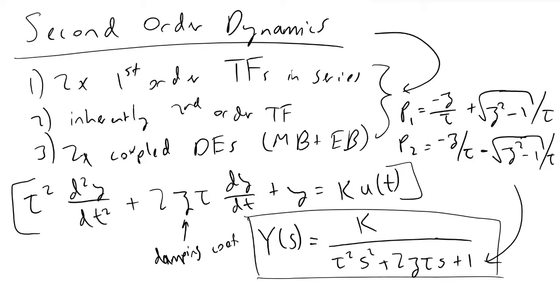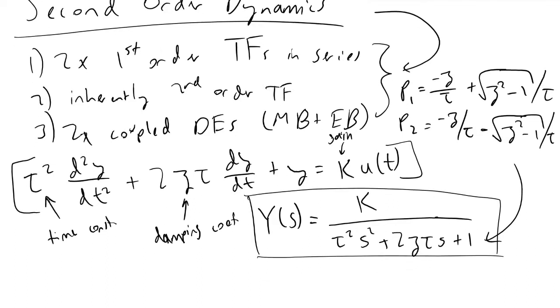To further define these variables: tau is our time constant and k is our gain. There are three cases that we're going to consider to see how this damping factor zeta affects the behavior of our second-order system.